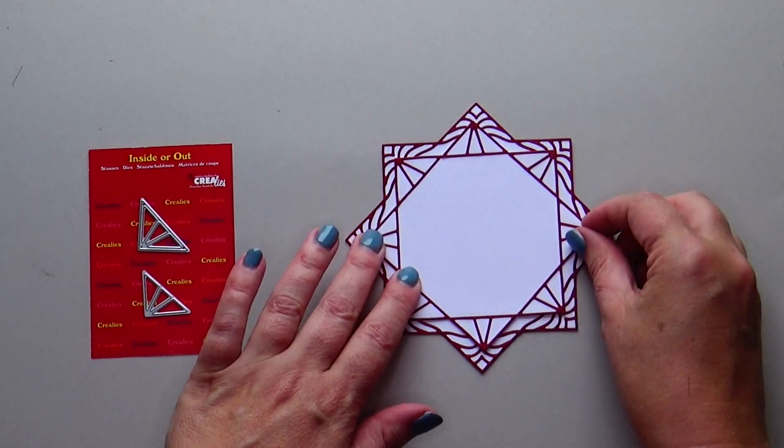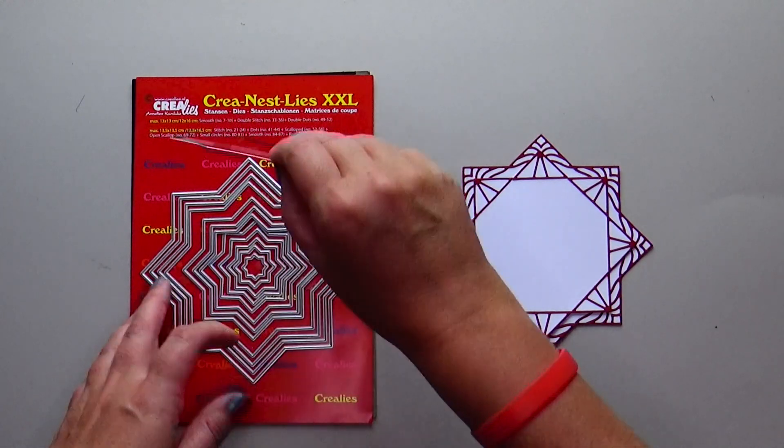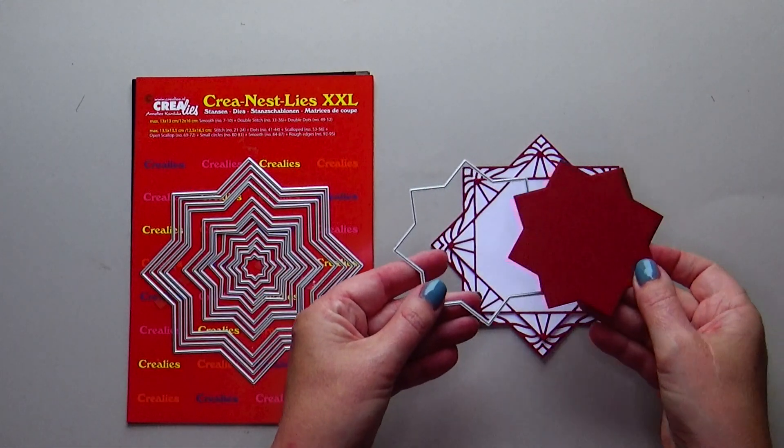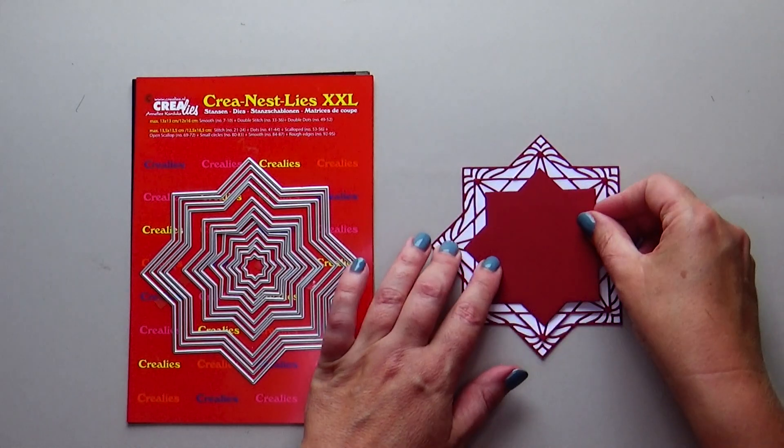Place both star shapes on top of each other. Now use the fifth die from the outside to die-cut the star out of colored cardstock and place it on the other star shapes.